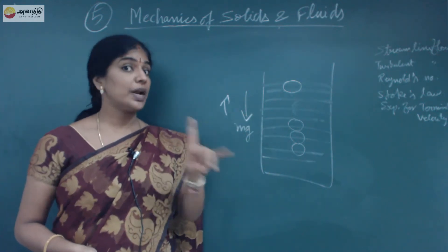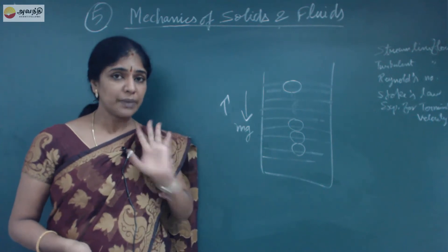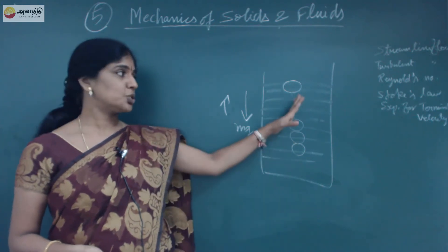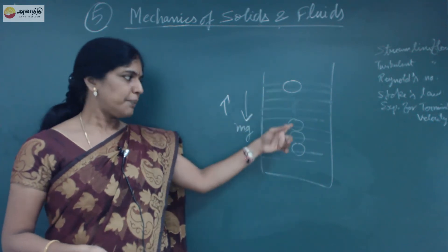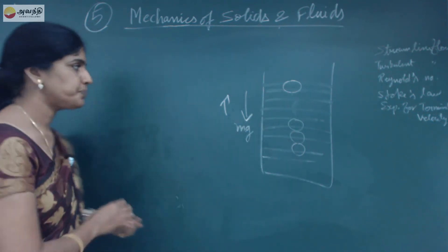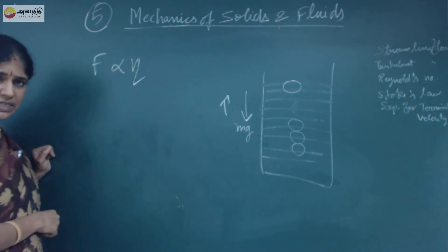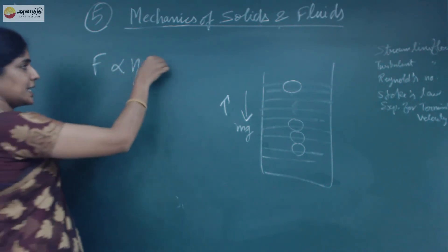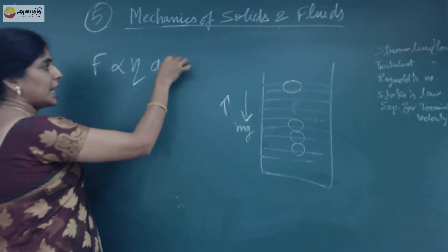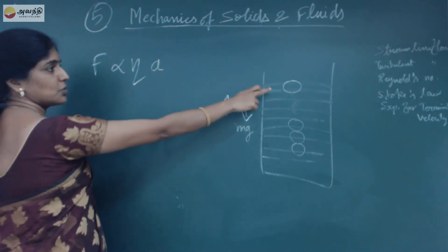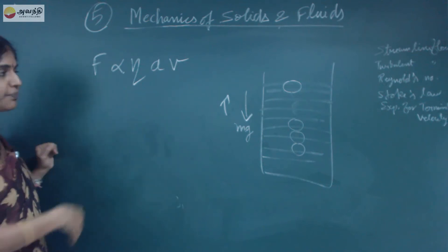Stokes' law is only for highly viscous liquid. In water it is low viscous. Stokes was the first scientist to study highly viscous liquids and their flow. He found that the viscous force is directly proportional to the coefficient of viscosity, directly proportional to the area of cross section between the two layers, and V is the velocity with which the object is moving.